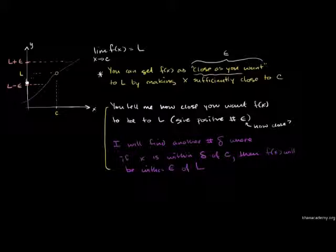We have L plus epsilon as the upper bound and L minus epsilon as the lower bound. So epsilon plus gives us the upper limit and minus gives the lower.